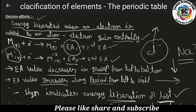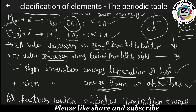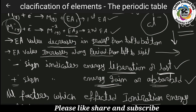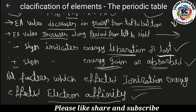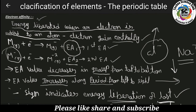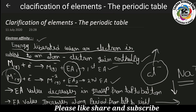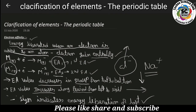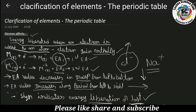Electron affinity in groups decreases, and in periods increases. The sign is negative. The same factors that affect ionization energy affect electron affinity. Please like, share, and subscribe, friends.